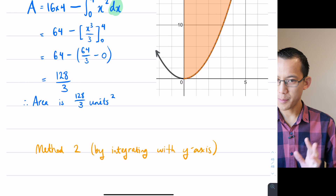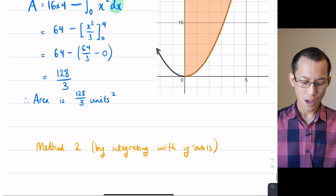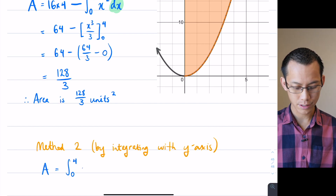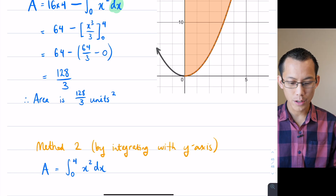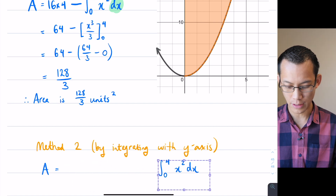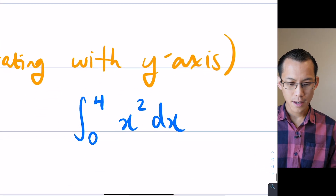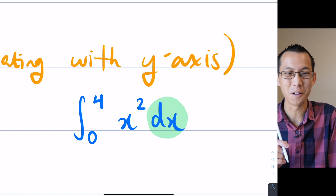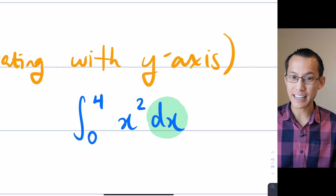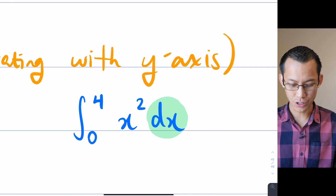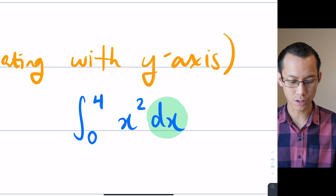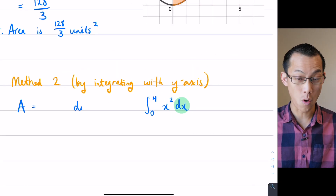This is a bit sneaky and a bit weird, so I'm going to walk you through it nice and slowly. Usually we would say that an area is equal to something like the integral from 0 to 4 of x squared dx — that's the way we normally think about this. But that's not actually the one we want here. The first thing I'm going to do is change this dx and switch it for a dy.